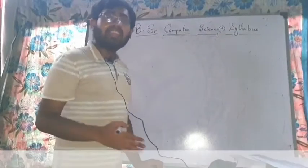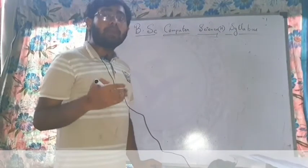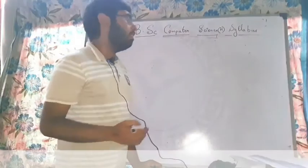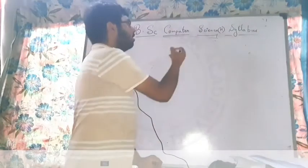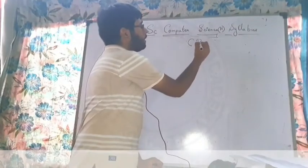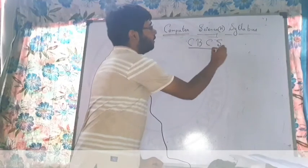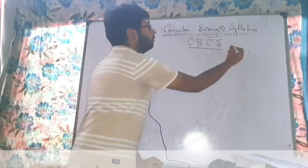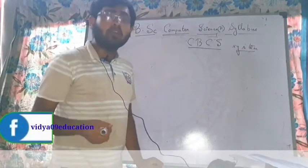This video is for students who want to pursue Computer Science Honours after passing Class 12 under an affiliated college of Calcutta University. You will be studying under the CBCS system, where you will have to complete six semesters — this is the three-year course.